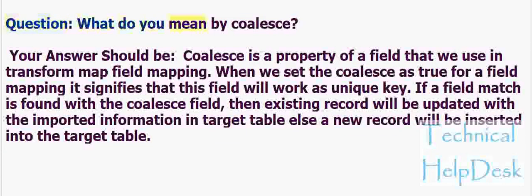Question: What do you mean by coalesce? Answer: Coalesce is a property of a field that we use in transform map field mapping. When we set coalesce as true for a field mapping, it signifies that this field will work as a unique key. If a field match is found with the coalesce field, then the existing record will be updated with the imported information in the target table; otherwise, a new record will be inserted into the target table.